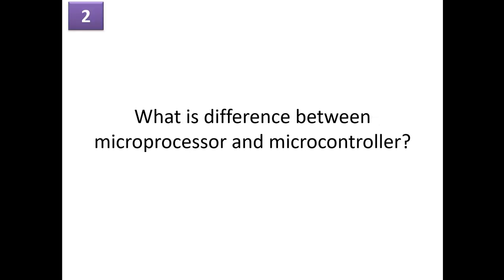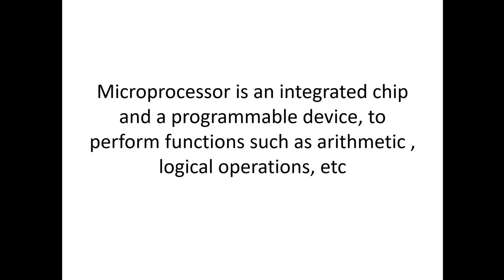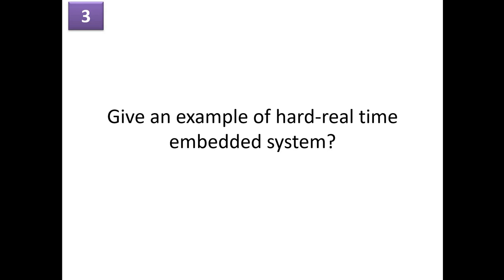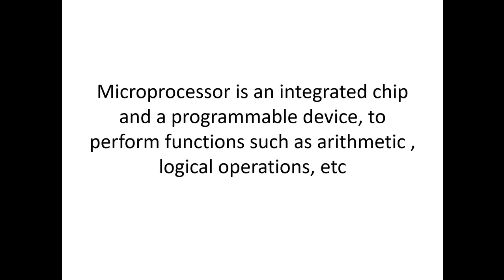Question number 2: what is the difference between microprocessor and microcontroller? The microprocessor is an integrated chip and a programmable device similar to the microcontroller, which can perform functions such as arithmetic and logical operations. You can compare the microprocessor as a brain and the microcontroller as a human body.